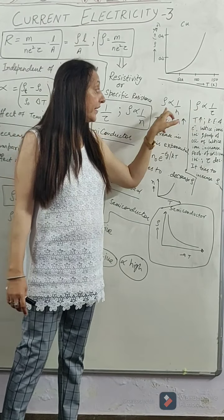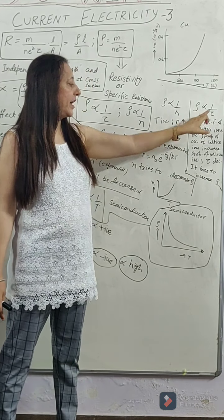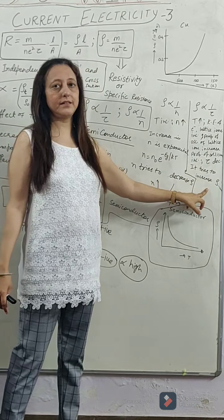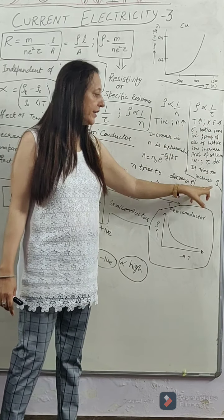But their effect is contrasting, means relaxation time tries to increase the resistivity. When you add the temperature, the tau decreases, then the tau increases.